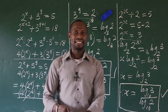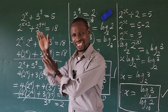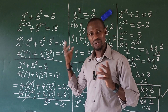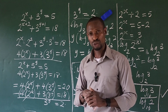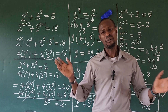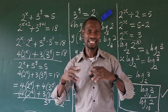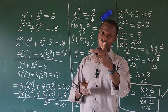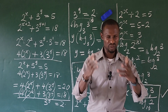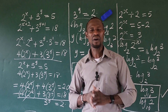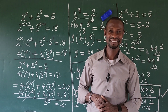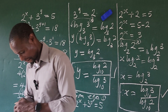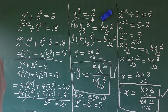So this brings an end to this simple simultaneous equation using the elimination method, without substituting for 2 to the power of x or 3 to the power of y. If you learned something from this, give the video a thumbs up, and if you're new, do not forget to subscribe. We'll bring more videos your way. Thanks for always being here. Bye for now.